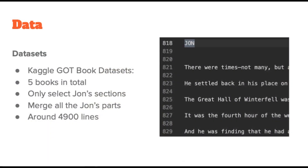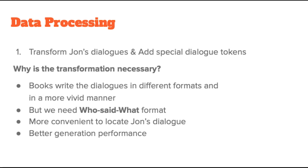For the dataset, we collect the Game of Thrones book text scripts from Kaggle, and there are five books in total. We only select those from Jon's sections, since the book is written in character sections. We merge all of Jon's parts together, which gives us 4,900 lines in total. The most important data processing we did is to transform Jon's dialogue and add special dialogue tokens to each line.